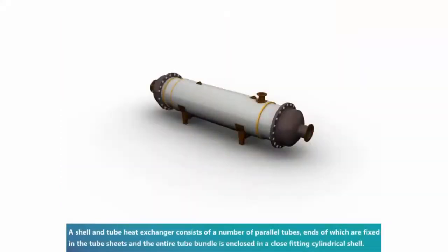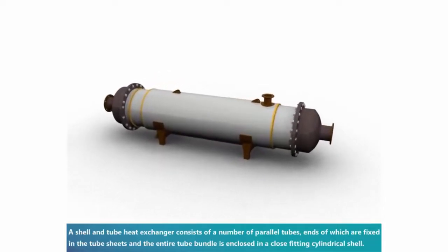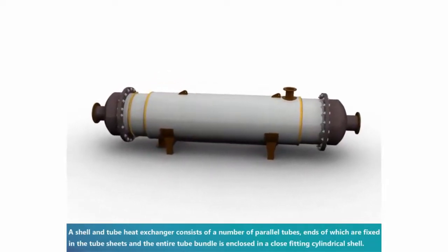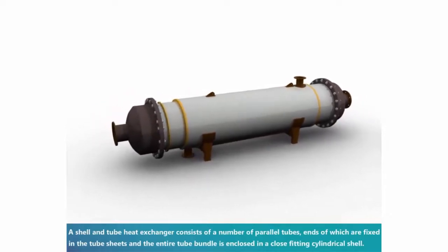A shell and tube heat exchanger consists of a number of parallel tubes, ends of which are fixed in the tube sheets and the entire tube bundle is enclosed in a close fitting cylindrical shell.